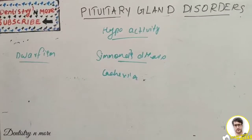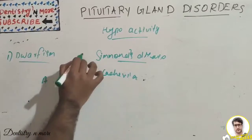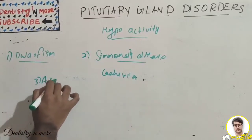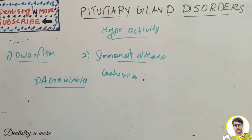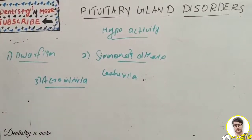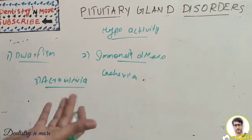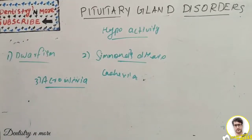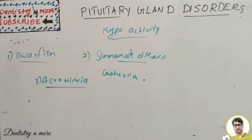There is one more hypoactivity condition: acromicria. Acromicria is a condition in adults characterized by atrophy of the extremities of the body. It is caused by deficiency of growth hormone releasing hormone and is related to hyposecretion of adrenocortical hormone. The person experiences loss of sexual function and becomes lethargic and obese.